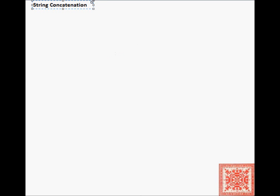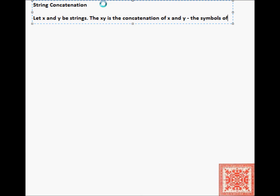The next concept is string concatenation. String concatenation in theoretical computer science is a binary operation. It doesn't mean that you cannot concatenate more than two strings. You can, but you just concatenate the first two and then the third one, or the second and third, and then concatenate the first one to the beginning. Let x and y be strings, then xy is the concatenation of x and y. That means the symbols of x followed by the symbols of y in that order. The order does matter because we're talking about strings, not sets.